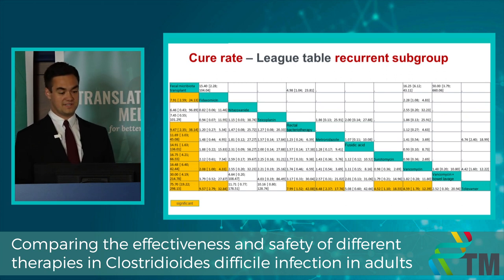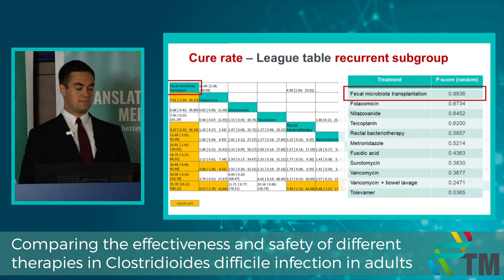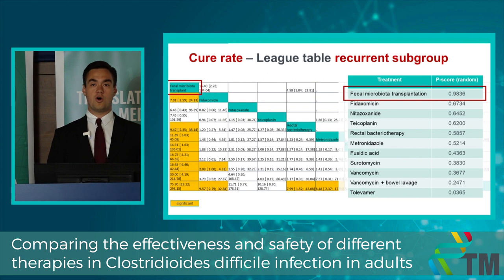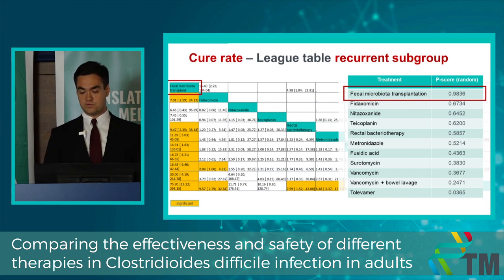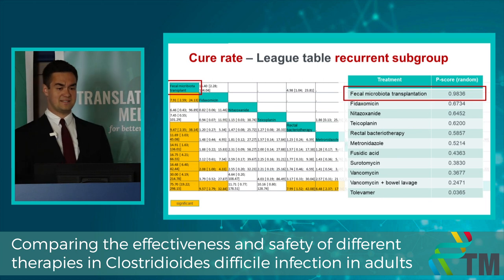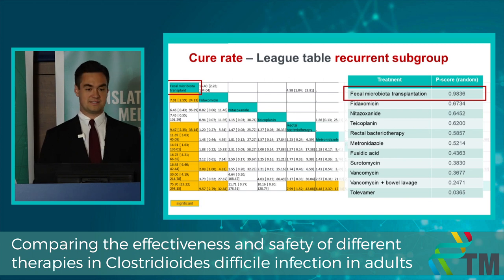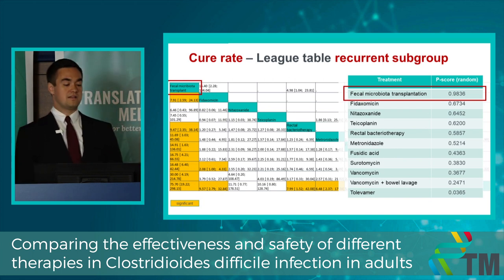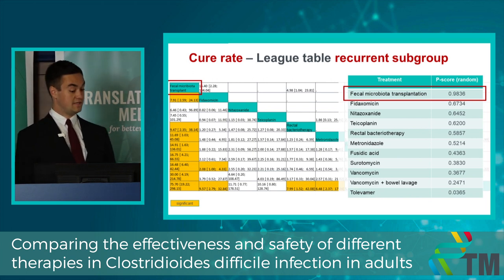This is the league table in the recurrence subgroup. FMT became first in this analysis. If we compared FMT with fidaxomicin, we saw that there is almost eight times higher chance of recovery in the FMT arm. According to the league table and P-score, we can say that FMT is mathematically significantly better than the other treatments. This analysis suggests that in the case of recurrent C. diff infection, the best possible therapy is FMT.